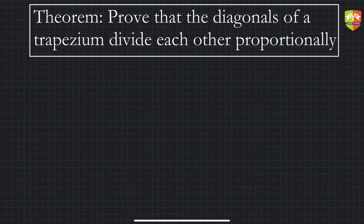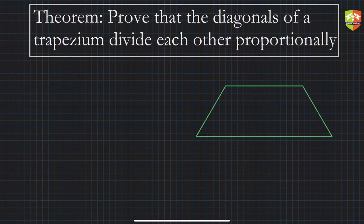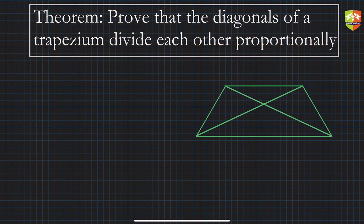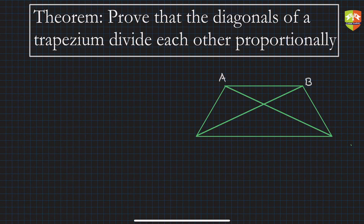Let me draw a trapezium first. So this is a trapezium, and it says that the diagonals of a trapezium divide each other proportionately. Let's also draw the diagonals — this is the first diagonal, and the other one is this. Good, so we have drawn the trapezium.